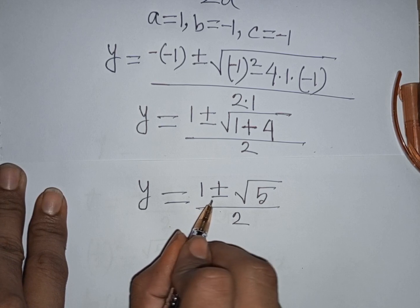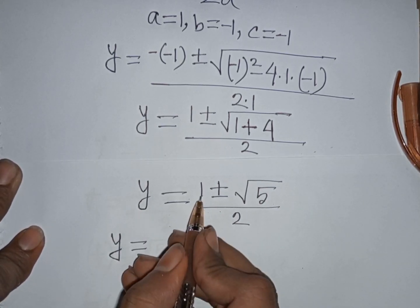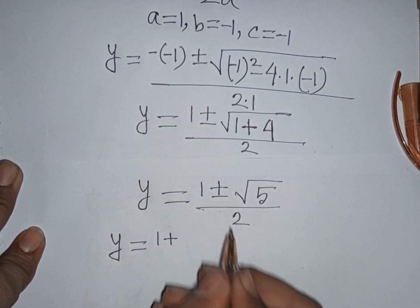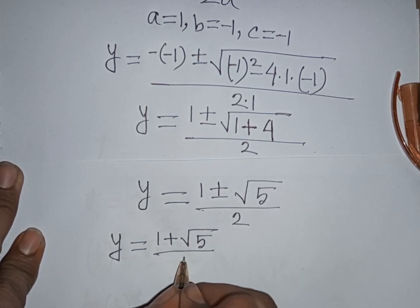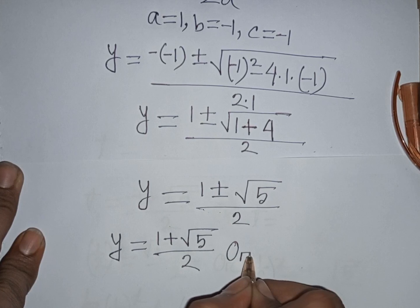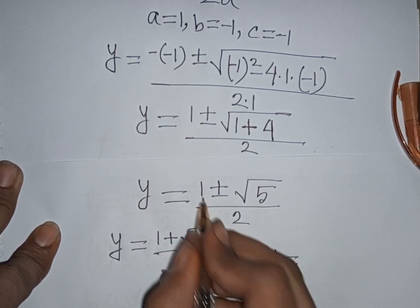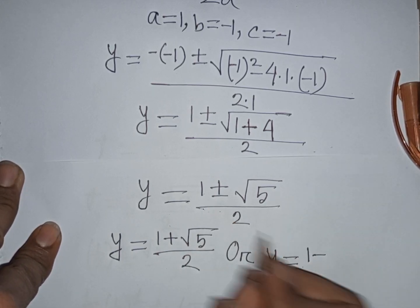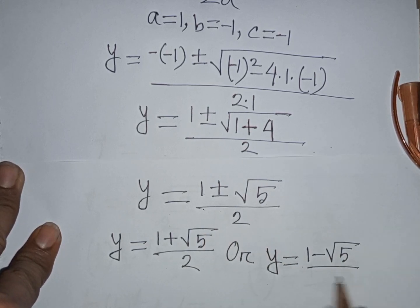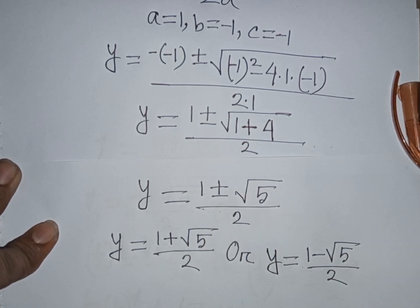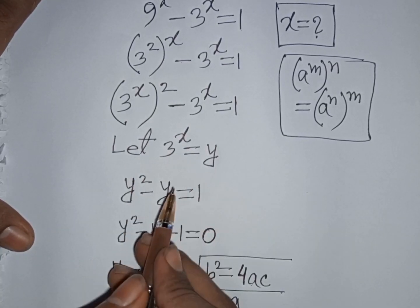We have two cases: y equals (1 plus square root of 5) divided by 2, or y equals (1 minus square root of 5) divided by 2. Remember that y was substituted for 3^x.